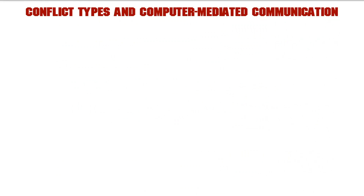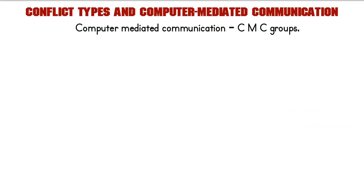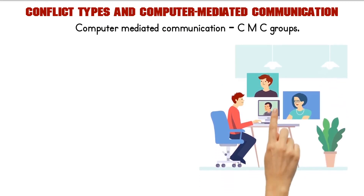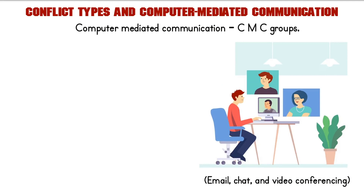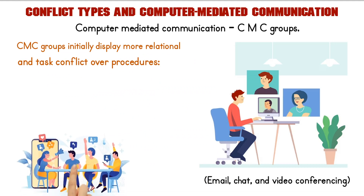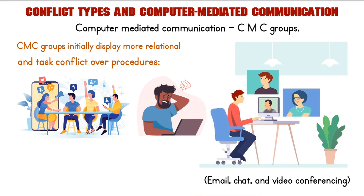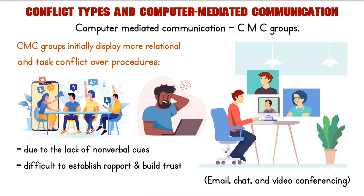Conflict types and computer-mediated communication. Conflict is an inevitable part of human interaction, and it is no different in computer-mediated communication, or CMC, groups. CMC refers to the use of digital tools such as email, chat, and video conferencing to communicate and collaborate. CMC groups initially display more relational and task conflict over procedures. CMC groups may experience more conflict than face-to-face groups at the beginning of their collaboration, due to the lack of non-verbal cues, which can make it more difficult to establish rapport and build trust. Different communication styles and cultural backgrounds may also lead to misunderstandings and conflicts over procedures.